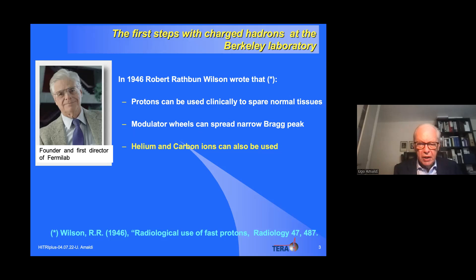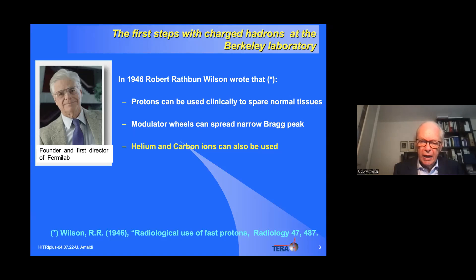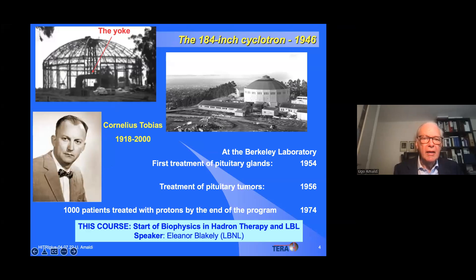He invented a rotating wheel to spread the Bragg peak, which almost everybody uses now. Most importantly, very few people know that in this paper — if you read it to the end — he also suggested that helium and carbon ions could be used, without explaining why. He didn't know the reason, but he had the intuition of a great scientist.